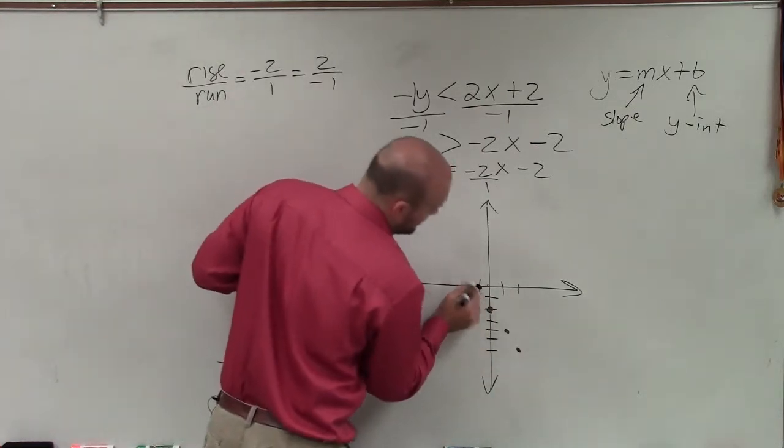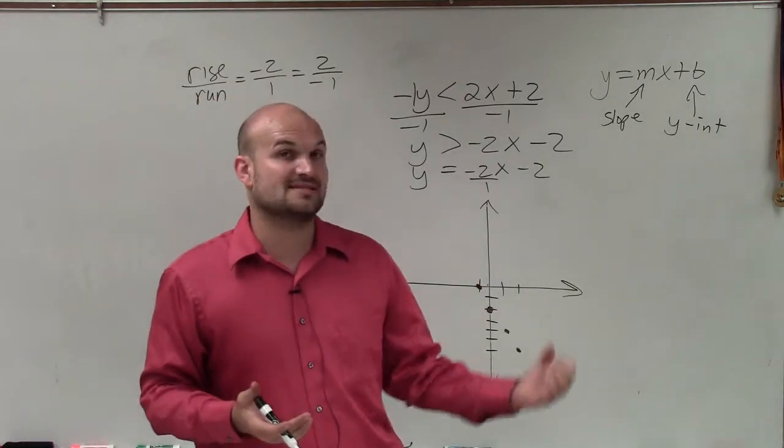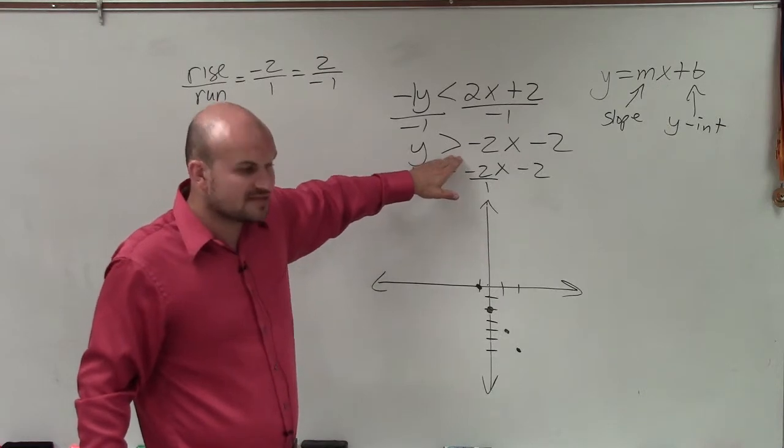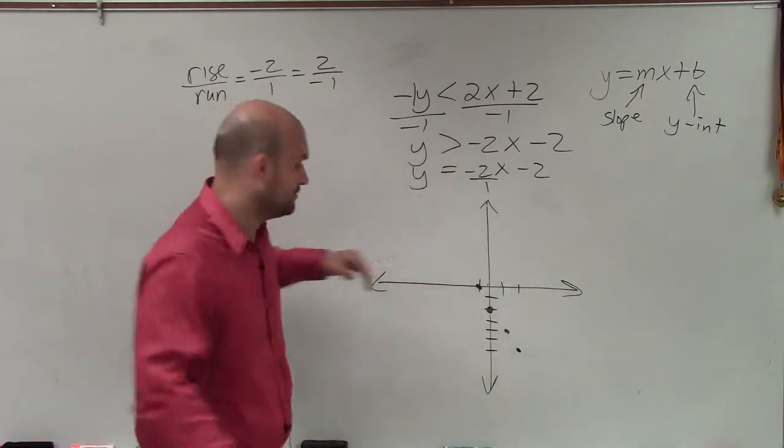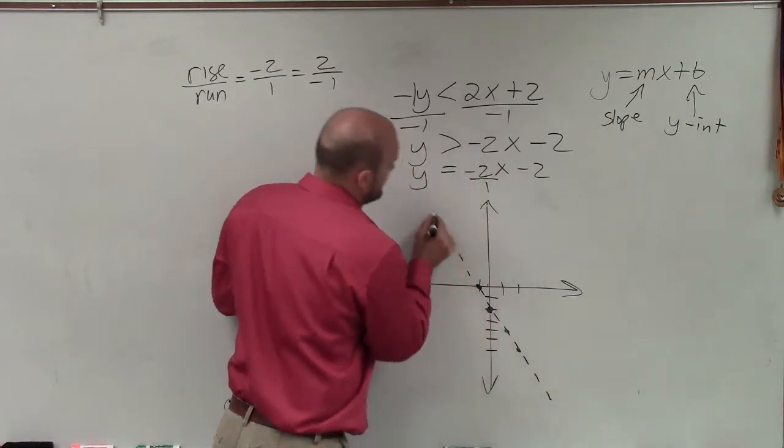And when I connect my points here, I'd make a nice big line. But before I go and connect my points, I want to determine, is this a solid or a dashed line? Well, since my inequality symbol is greater than and not greater than or equal to, this is going to represent a boundary line that will be dashed.